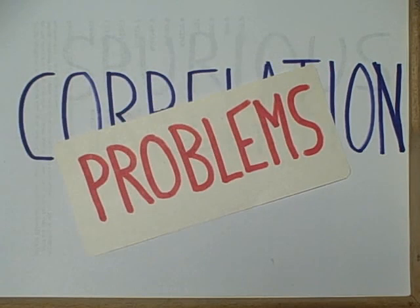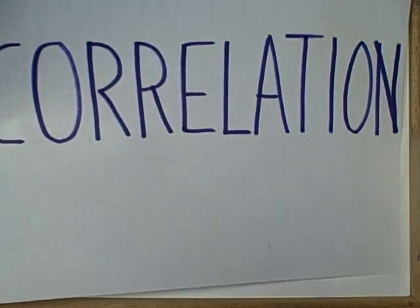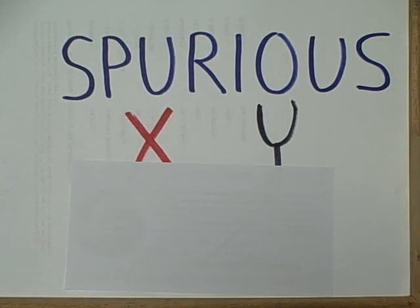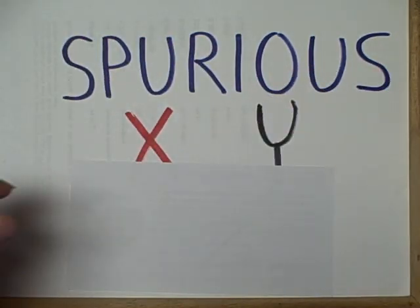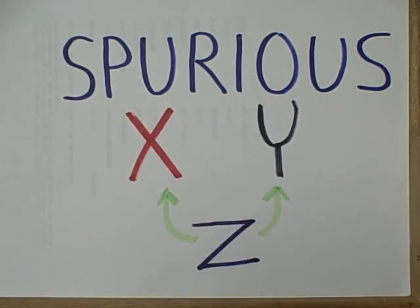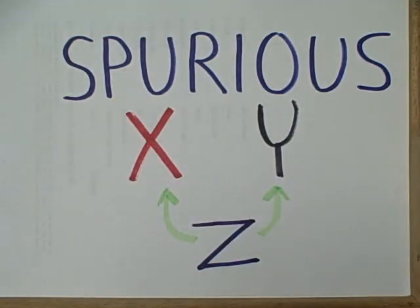Correlational designs also have their own set of problems. Perhaps the biggest is spurious relationships. We observe two variables, x and y, and notice a strong correlation, but we must resist the temptation to infer that x caused y or that y caused x. There is another possible explanation — the spurious correlation — where both variables x and y could be the results of some third variable z that causes both of them.